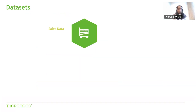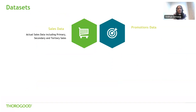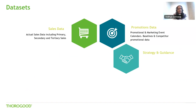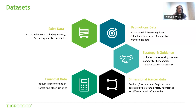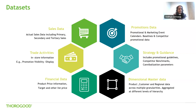Looking at some of the data sets reported in TPA: sales data includes primary sales, secondary sales, and tertiary sales like electronic point of sale data. Promotions data — the main data set — includes promotional and marketing event calendars, baselines, competitor promotional data, strategy and guidance, promotional guidelines, competitor benchmarks, and cannibalization parameters. There's dimensional master data including product, customer, and regional data across multiple granularities. We also have financial data like product price information, target information, and list price. Finally, there's a trade activities data set which includes in-store information like promotional visibility or display.